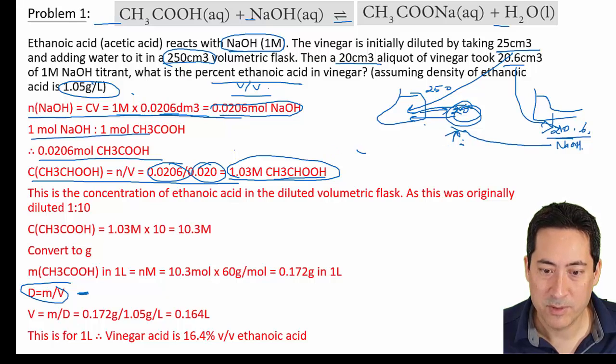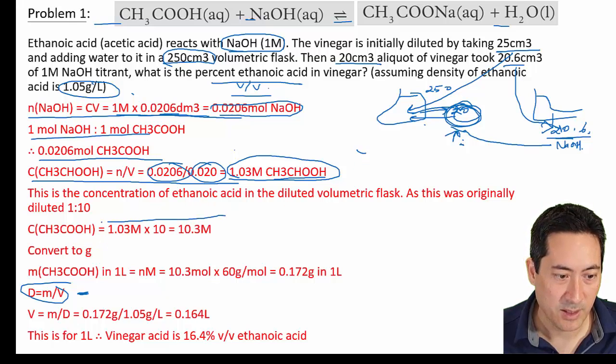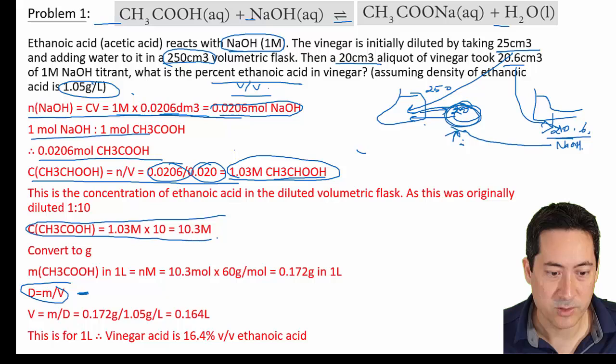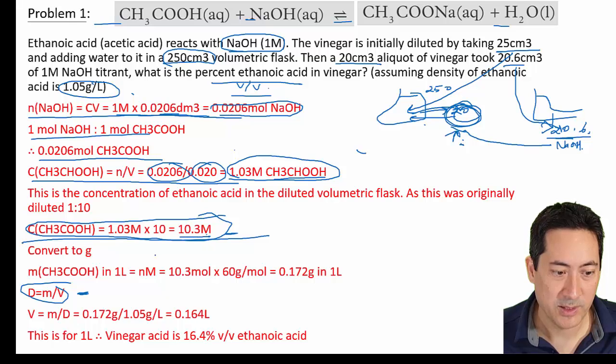Now that original solution was diluted 1 in 10. So we need to times that by 10. The actual original concentration of the acid was 10.3 molar. So that's sort of finished, but this has asked for a little bit more. There's 10.3 moles per litre. What's the percentage of that? If you've got 10.3 moles, acetic acid is 60 grams per litre. So that gives us 172 grams.